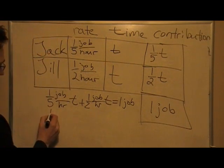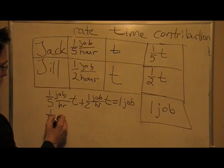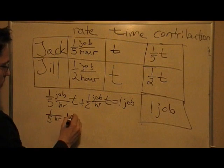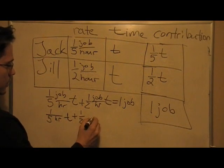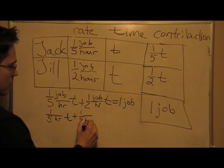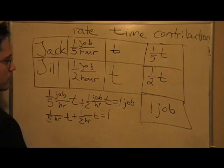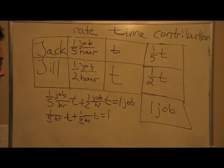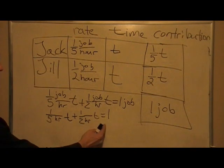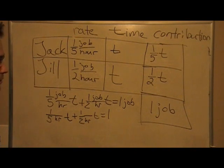So, now we have the following. One-fifth, or one over five hours, t, plus one-half over one over two hours, t, is equal to one. One no longer has units. So, what's happening now? Well, we've got to simplify the left-hand side. And remember what the one means. It means one full job. One hundred percent of a job.